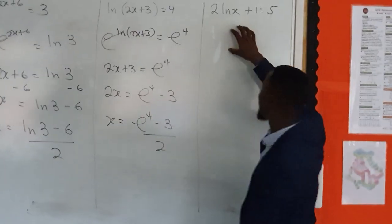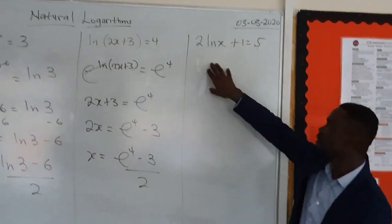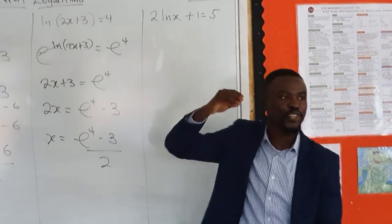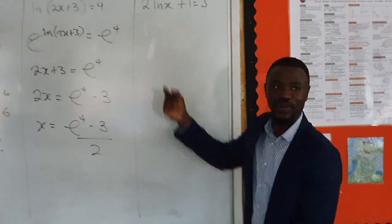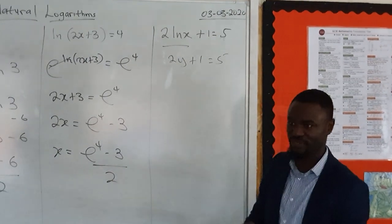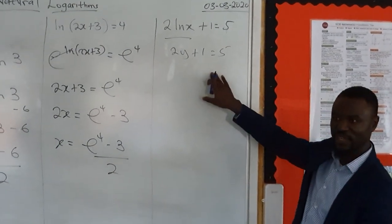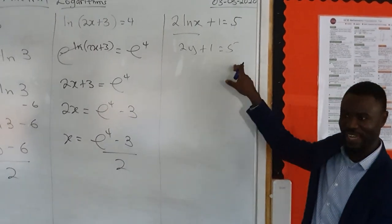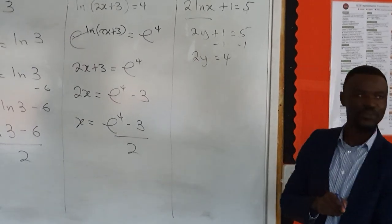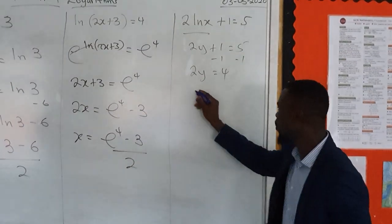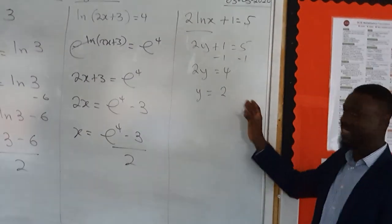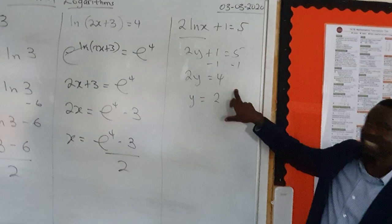But this part here works differently. Because you've got it as 2 ln x + 1 = 5. Think of it as solving normal equation, whereby you are given, if I write this as 2y + 1 = 5. If you were to solve this equation, what you would do is, we would first do take away 1 on both sides. So it becomes minus 1 minus 1. So we have 2y = 4. Then, we divide everything by 2. So our y would be equal to 2.